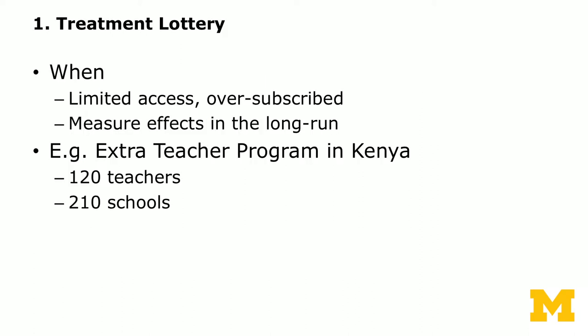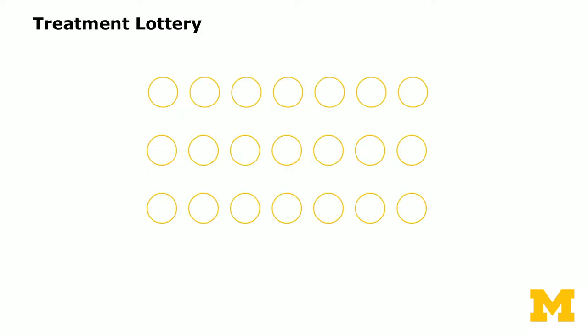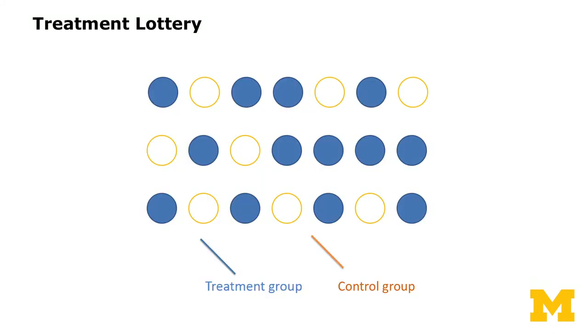The first research design is the treatment lottery, used when there is limited access and over-subscription and you want to measure effects in the long run. For example, Kenya wanted to assign extra teachers to schools. There were only 120 extra teachers but 210 schools, so a lottery was run — the blue dots represent schools randomized into receiving the treatment (extra teachers), while the control group continued with the same number of teachers as before.